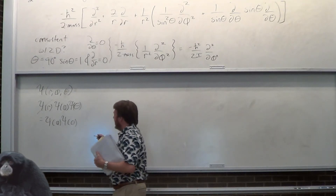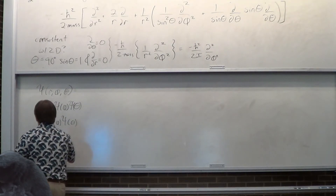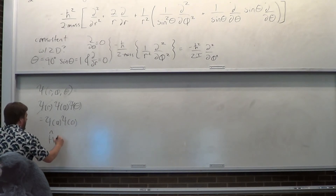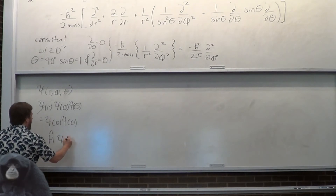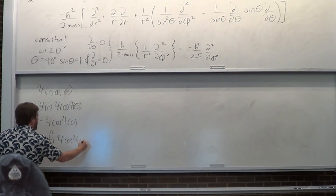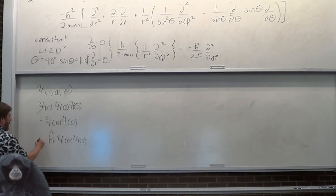The way to do this is to take the Hamiltonian, apply the separated wave function, and then divide.